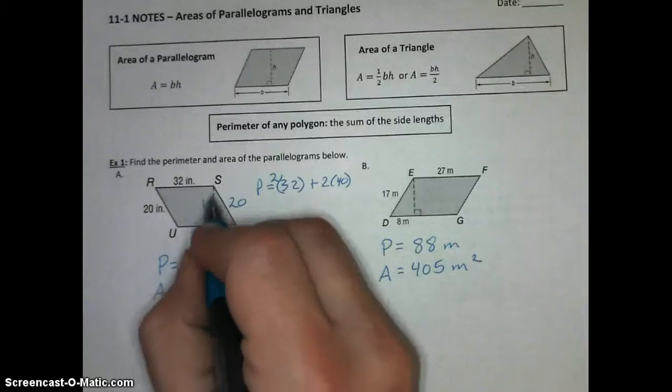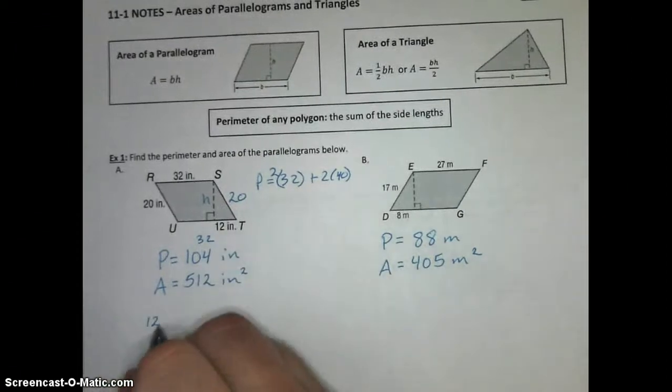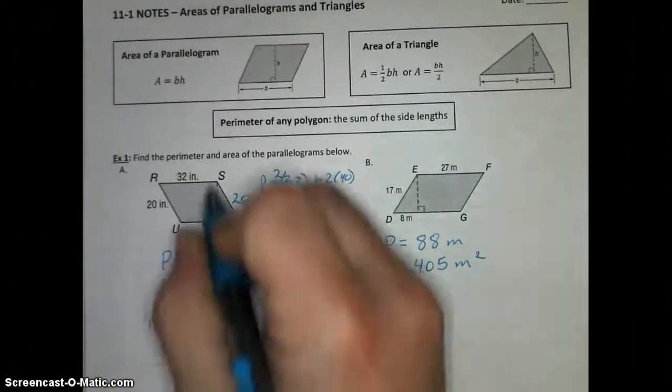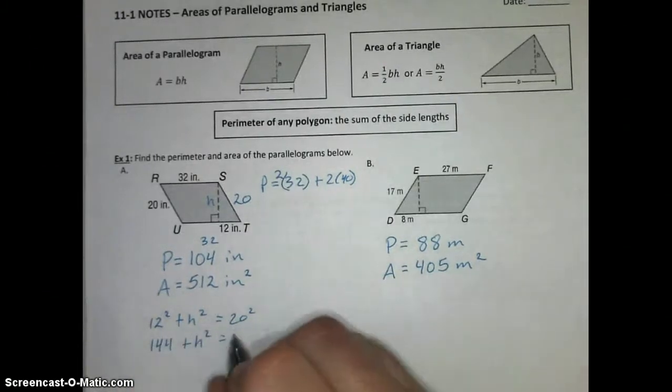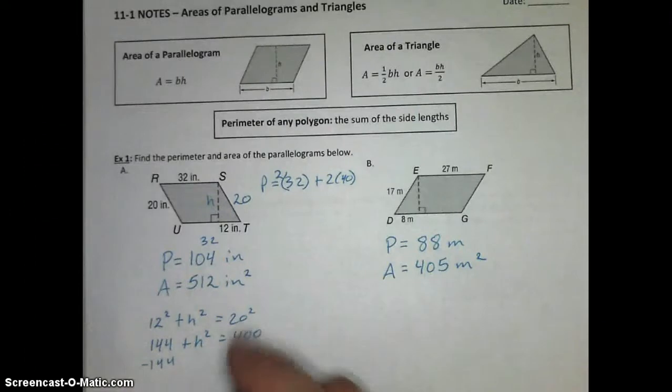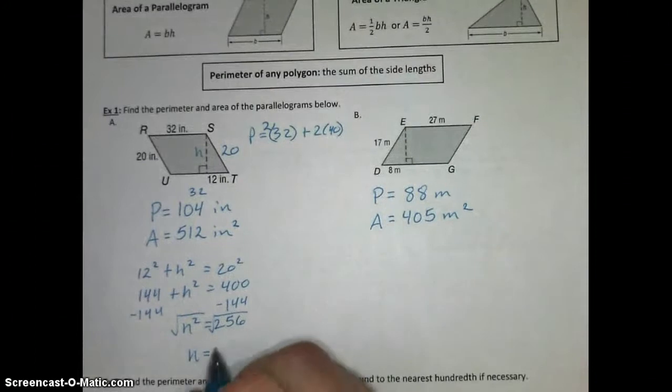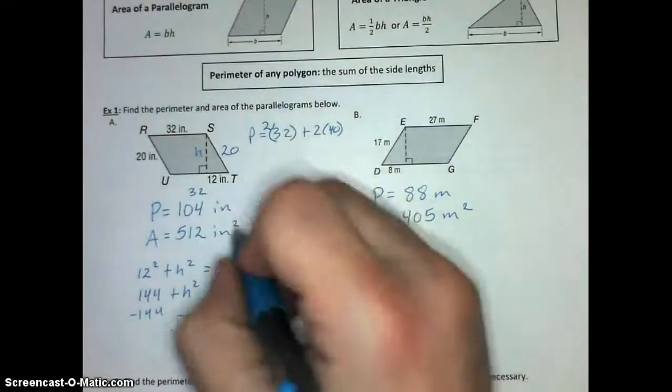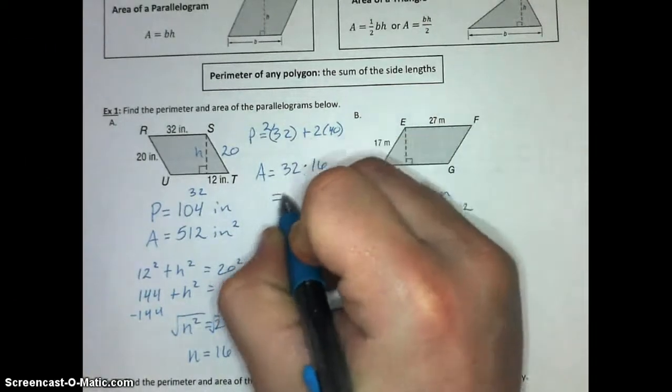But then, to find our area, we need that height measurement h, which is a leg of a right triangle. So we're going to use Pythagorean Theorem. We're going to say that 12 squared plus h squared equals 20 squared. 12 squared is 144. 20 squared is 400. And when I subtract 144 from both sides, we get h squared is 256. And take the square root of both of those, and you get h is 16. Since h is 16, our area is base times height, which our base is 32 times our height of 16 is what gives us 512.